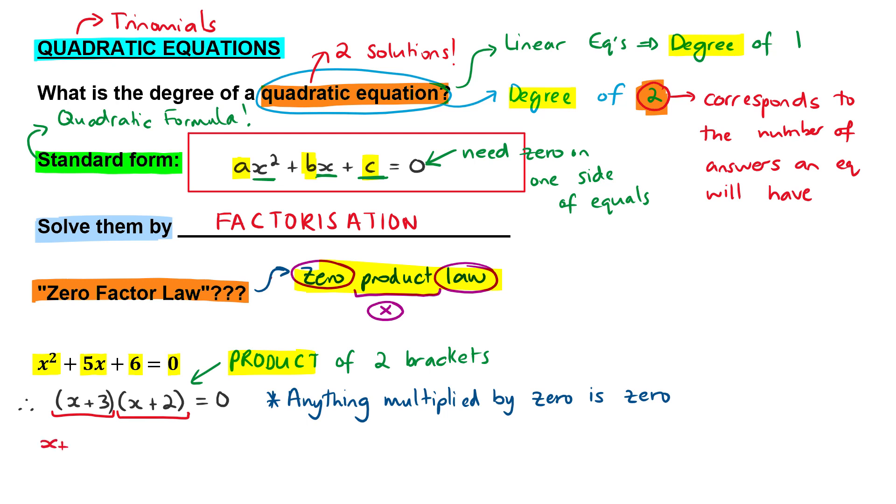So as long as x plus 3 equals zero, or x plus 2 equals zero, the equation will be solved. And you'll see that these two over here, I can actually solve them quite easily. For the first one all I have to do is take the 3 over. So I'll get x is equal to minus 3, or x is equal to minus 2.